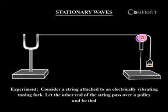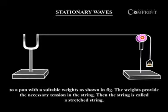Experiment. Consider a string attached to an electrically vibrating tuning fork. Let the other end of the string pass over a pulley and be tied to a pan with suitable weights as shown in the figure. The weights provide the necessary tension in the string. Then the string is called a stretched string.